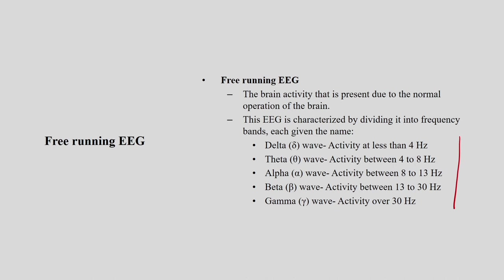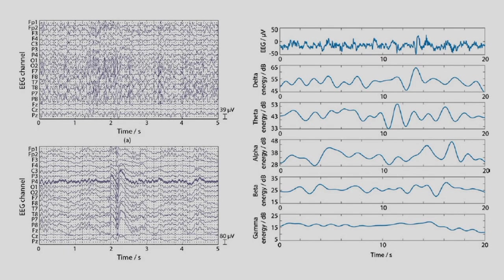By measuring these waves, we can understand at what state the brain is active. This is the basis of brain activity and allows us to understand the position or condition of the brain. An example of how the data looks in graphs: delta, theta, alpha, beta, and gamma — each has a distinct waveform pattern.